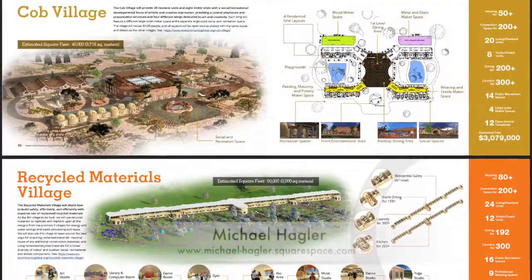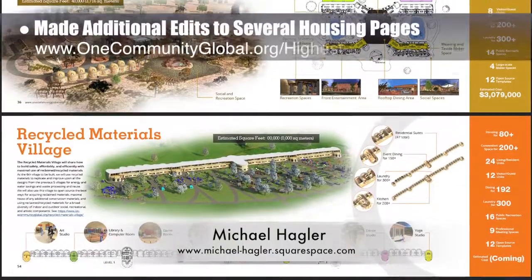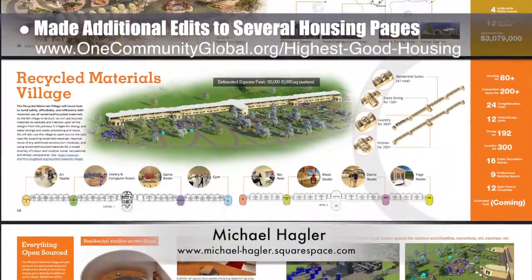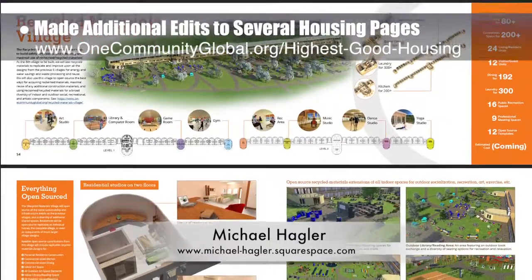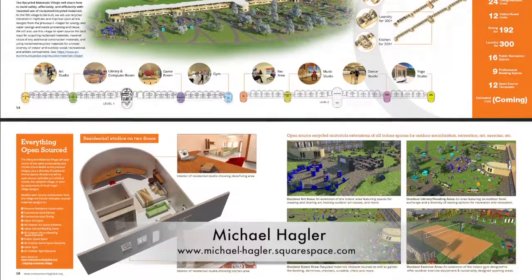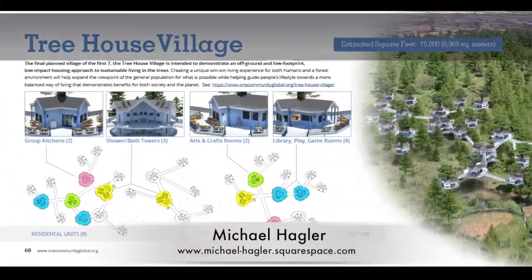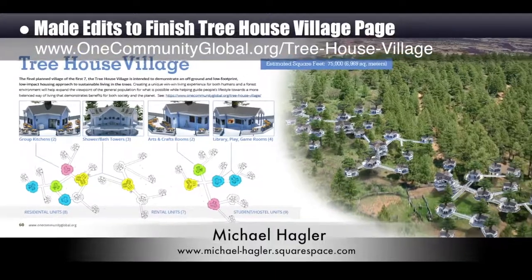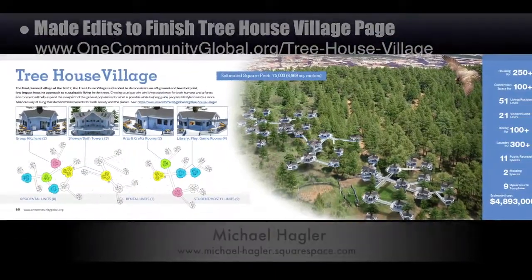Michael Haggler, senior graphic designer and artist, finished another round of edits and updates for the cob village pod 3 and the recycled materials village pod 6 pages of the seven villages book being developed. Michael also finished another round of final edits to complete the treehouse village pod 7 page that is now live on the open source hub.